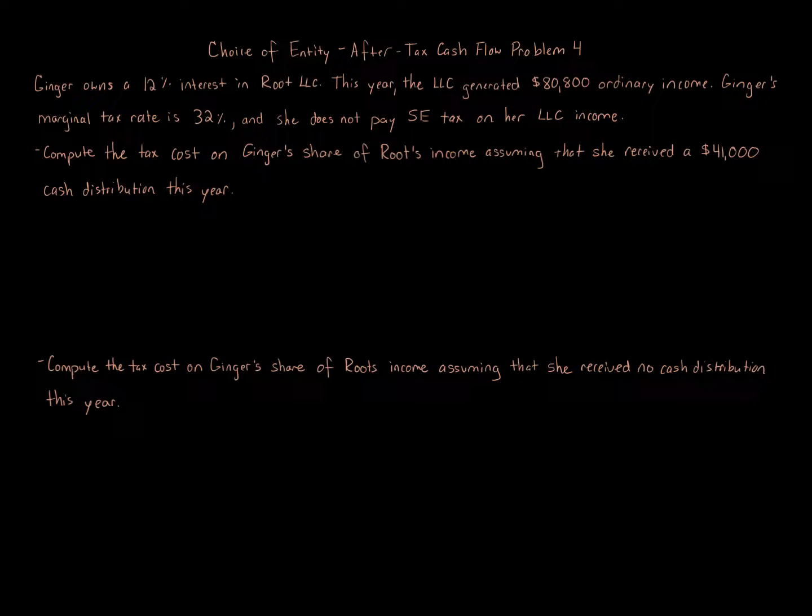Let's focus on what the facts are: Ginger owns a 12% interest in an LLC that generated $80,800 of ordinary income. Marginal tax rate for Ginger is 32%. No self-employment tax on the LLC income, meaning Ginger's probably not actively involved in the business—more of a passive activity.